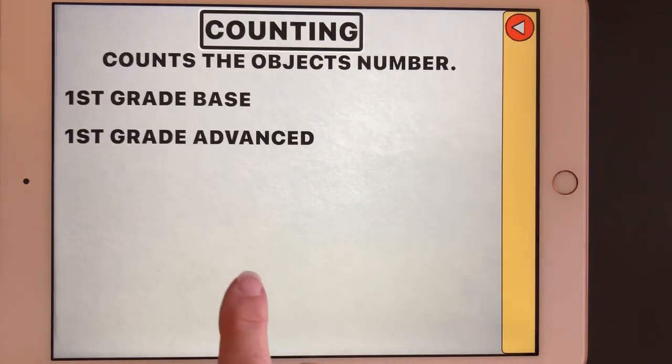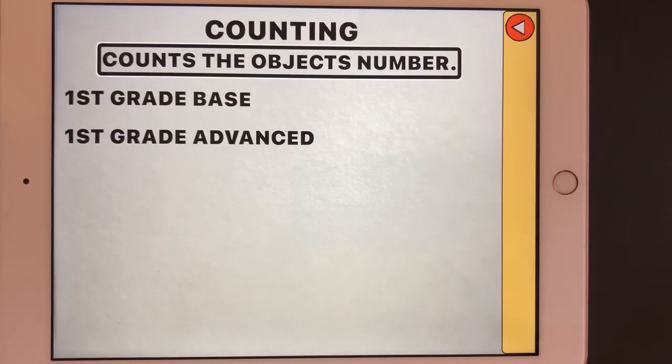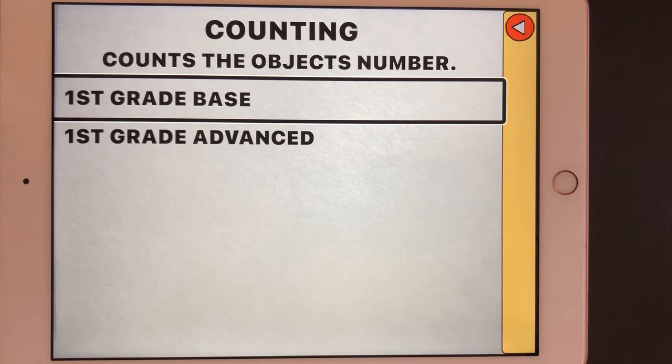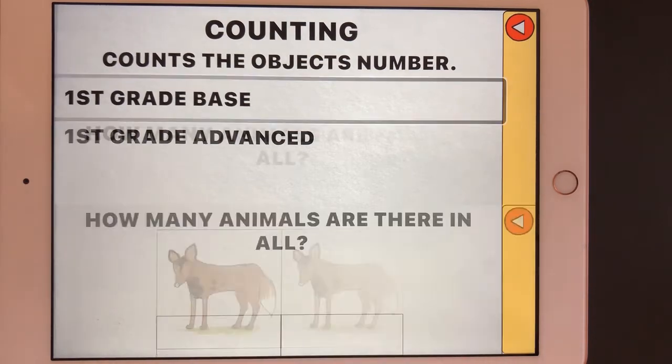Exercise counting. Count the object's number. I'm just right swiping down until I get to the first grade base. There's also an option of first grade advanced. For today we're just going to look at the most basic. So we're going to stick with the base. I'm going to open that up with a double tap.